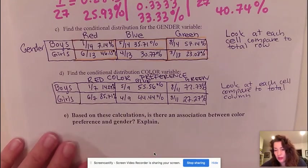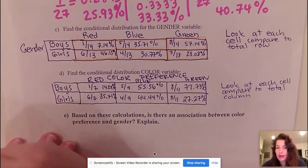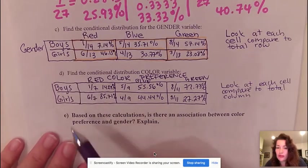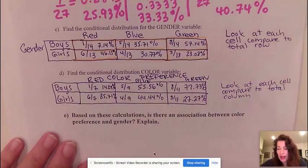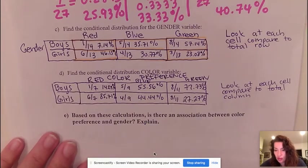And then what you want to do is use context. So what are we talking about? We're talking about gender versus color preferences. And the last thing you want to use in your statement is percentages, you want to use statistics to state whether there's an association or if there isn't.